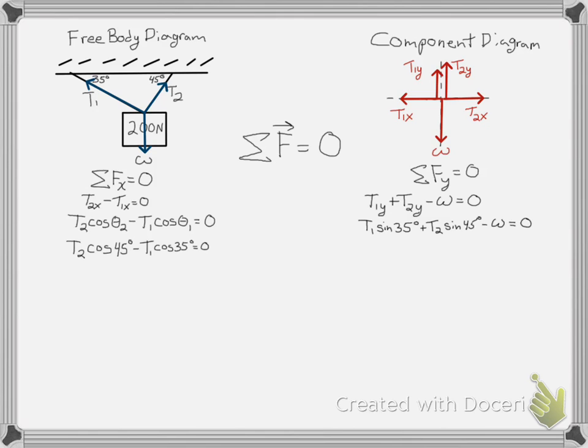At this point, we have two unknown variables — the two tensions, T1 and T2. But that's okay because we have two equations as well. So we have a system of equations and we'll have to solve them simultaneously.